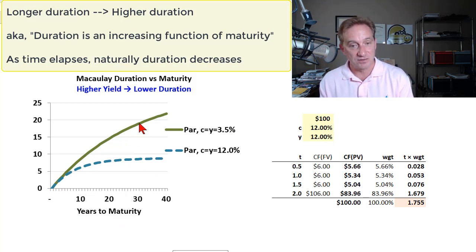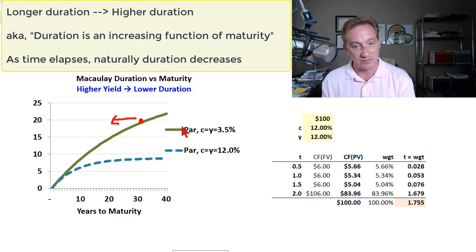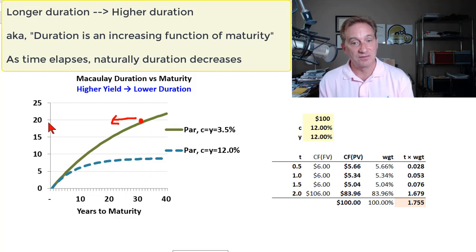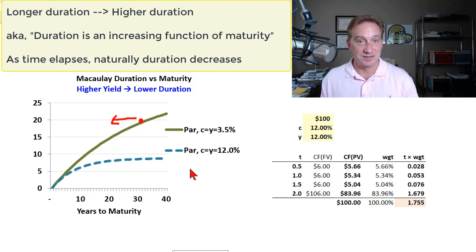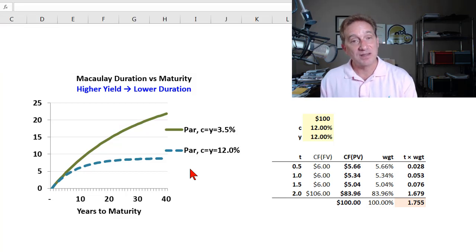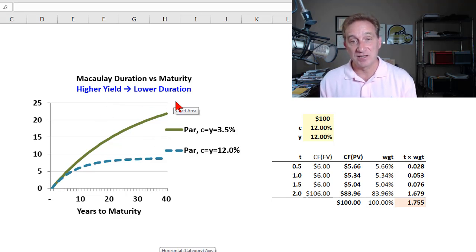Time marches from right to left — so if we start with a 30-year bond and just let it mature naturally, its maturity is decreasing, and so its duration is also decreasing. In general, as the bond matures, its duration decreases. The less intuitive relationship is between yield and duration.